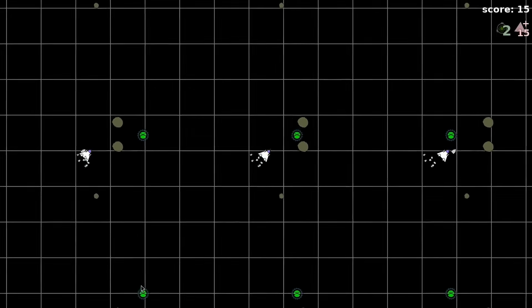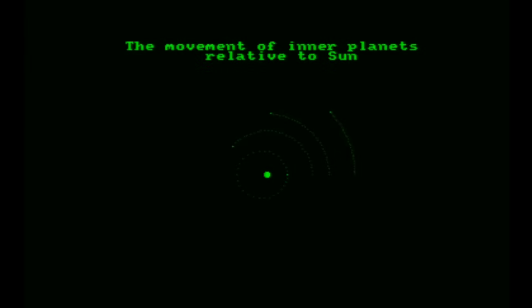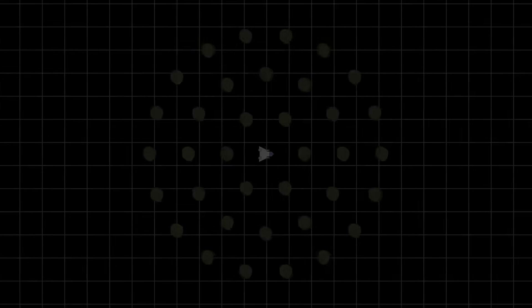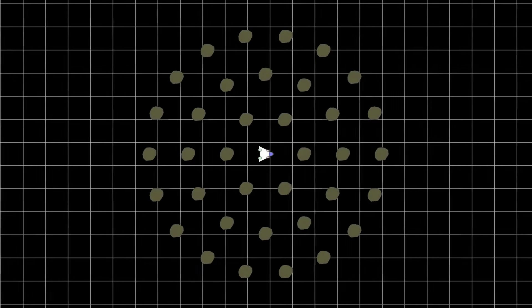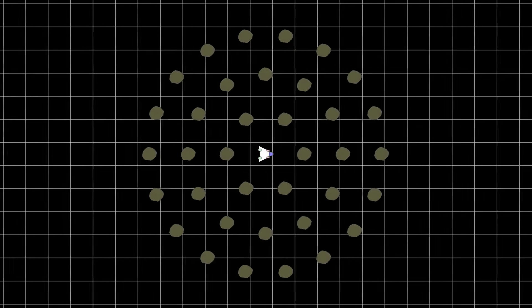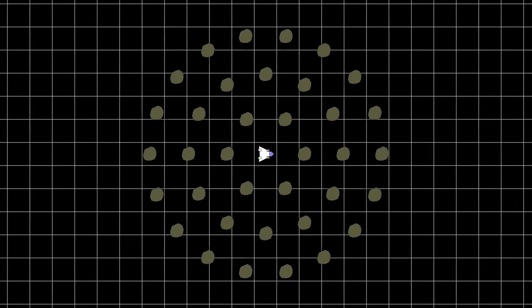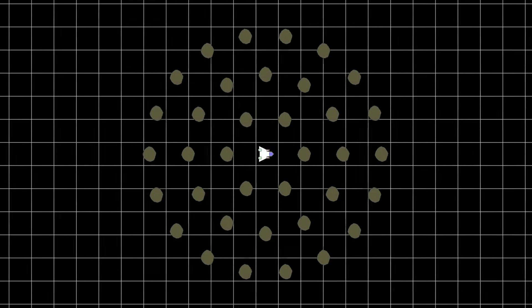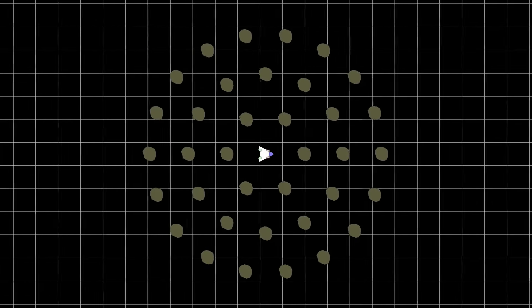One interesting consequence of this physics is that we cannot accurately determine our speed. We know that Earth is moving very quickly around the Sun, but we do not feel it. That is because the whole Earth is moving with us. You can see this effect in this slide. The spacecraft is moving very quickly relative to the grid. Still, all the rocks are also moving at speed 0 relative to the spacecraft. As a result, the spacecraft cannot tell it is moving just by looking at the rocks. We call it the Galilean invariance.